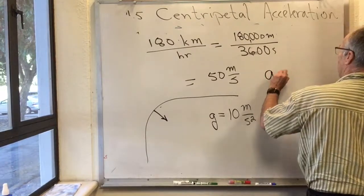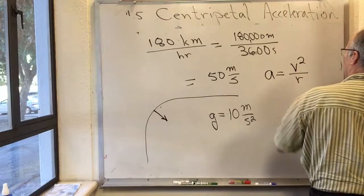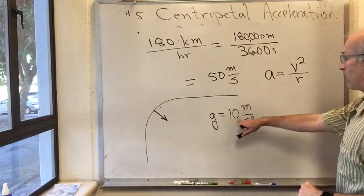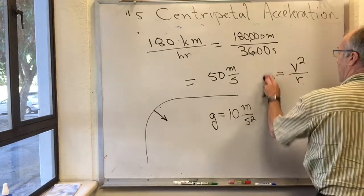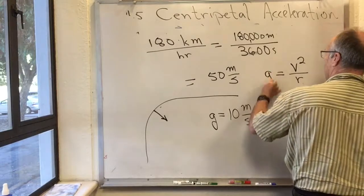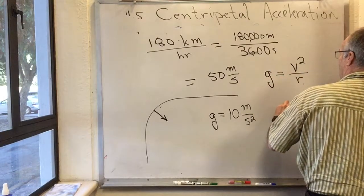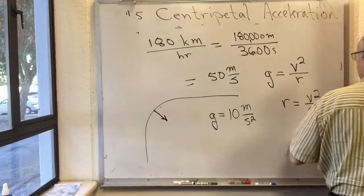Well, we use a is equal to v squared over r. We put in that in this, the question here that we formulated, we're asking how sharp a corner is it when a is g? We're given the v, and so we learned that r is equal to v squared over g.